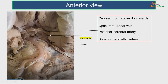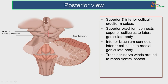The crus cerebrae is crossed from above downwards by the optic tract, then a basal vein, then the posterior cerebral artery and superior cerebellar artery. Between the posterior cerebral artery and superior cerebellar artery, we can appreciate the oculomotor nerve and the trochlear nerve coming out.